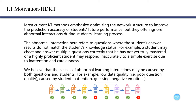The anomalous interaction here refers to questions where the student's answer results don't match the student's knowledge status. For example, a student may cheat and answer multiple questions correctly that they have not yet truly mastered, or highly proficient students may respond inaccurately to a simple question due to inattention and carelessness.